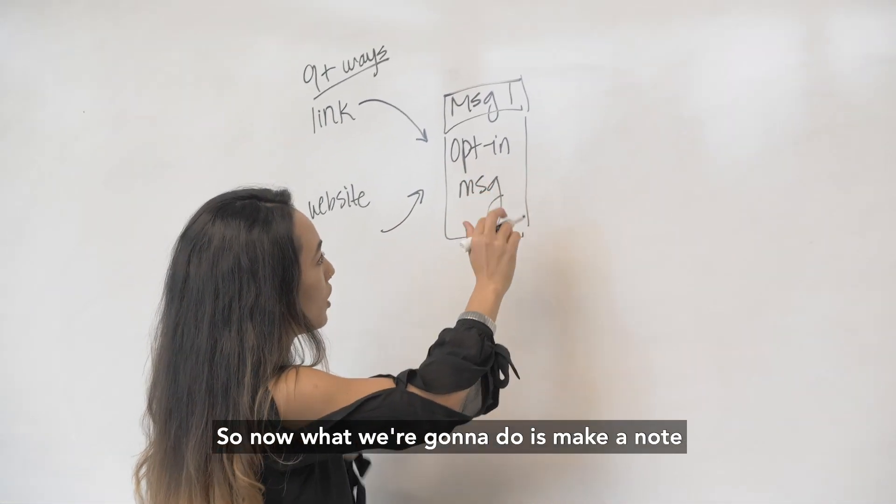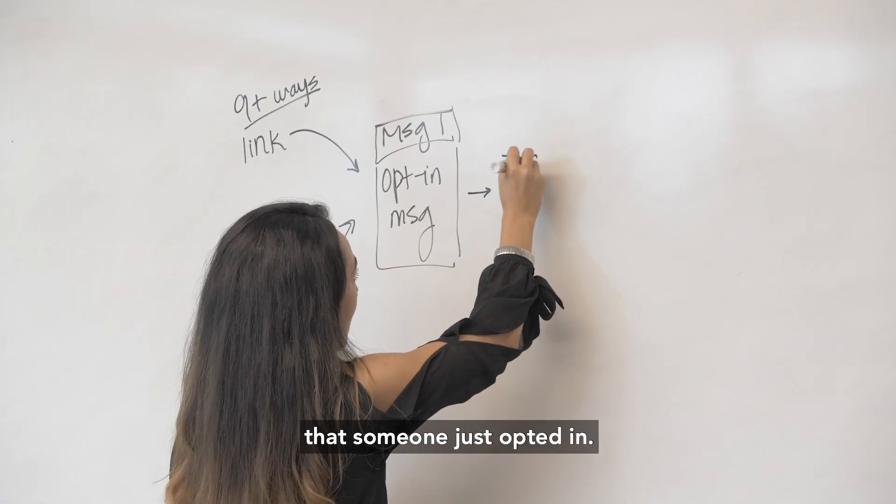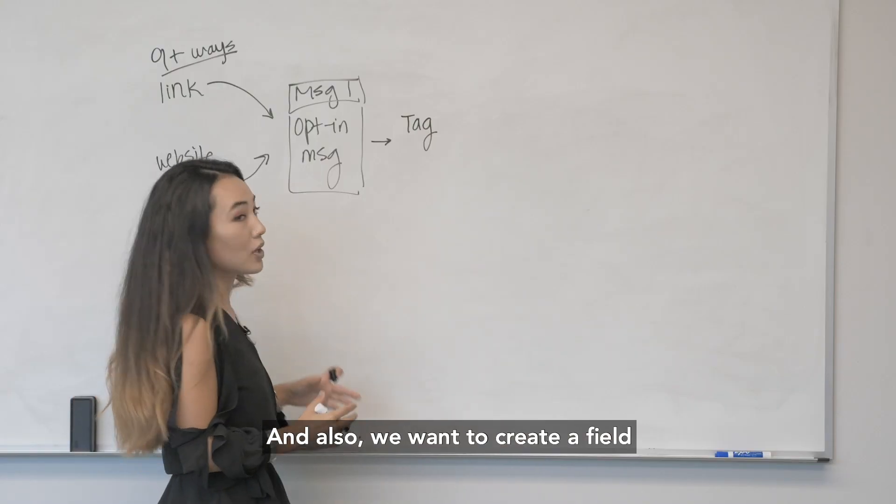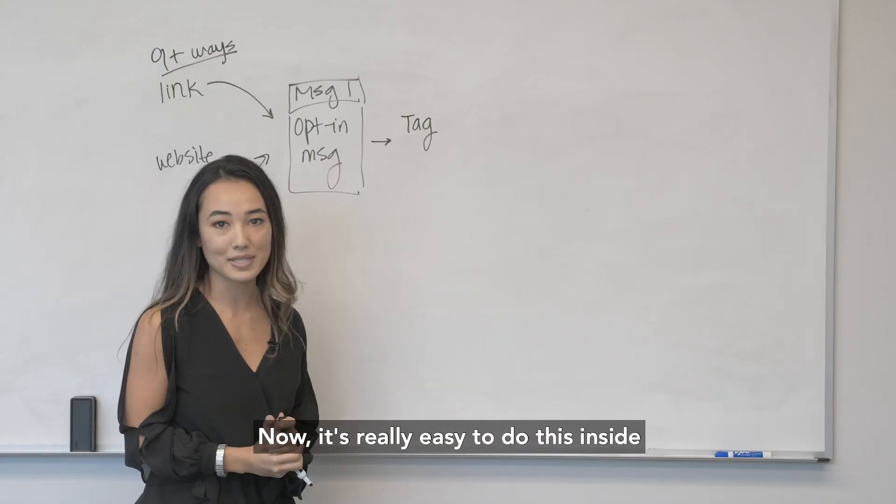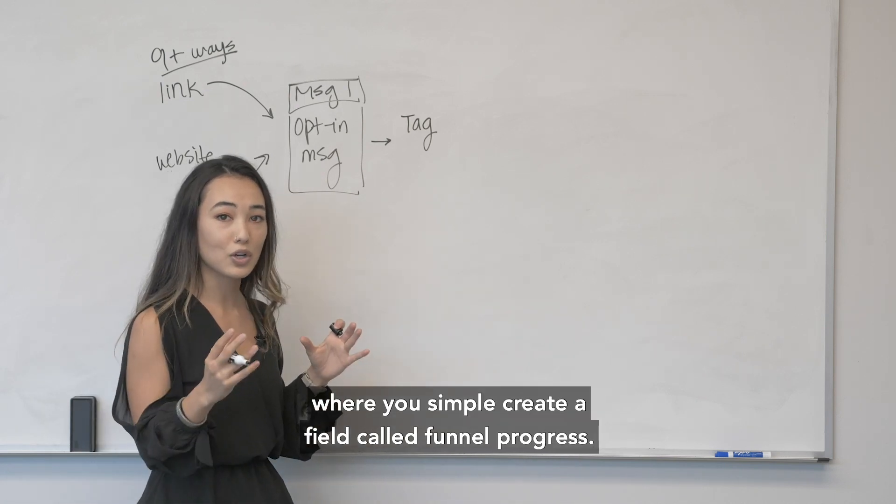Okay so we've got our opt-in message one. So now what we're going to do is make a note that someone just opted in and also we want to create a field that I typically call funnel progress. Now it's really easy to do this inside of a tool like ManyChat where you simply create a field called funnel progress and you can update the value of that field after each interaction someone takes.